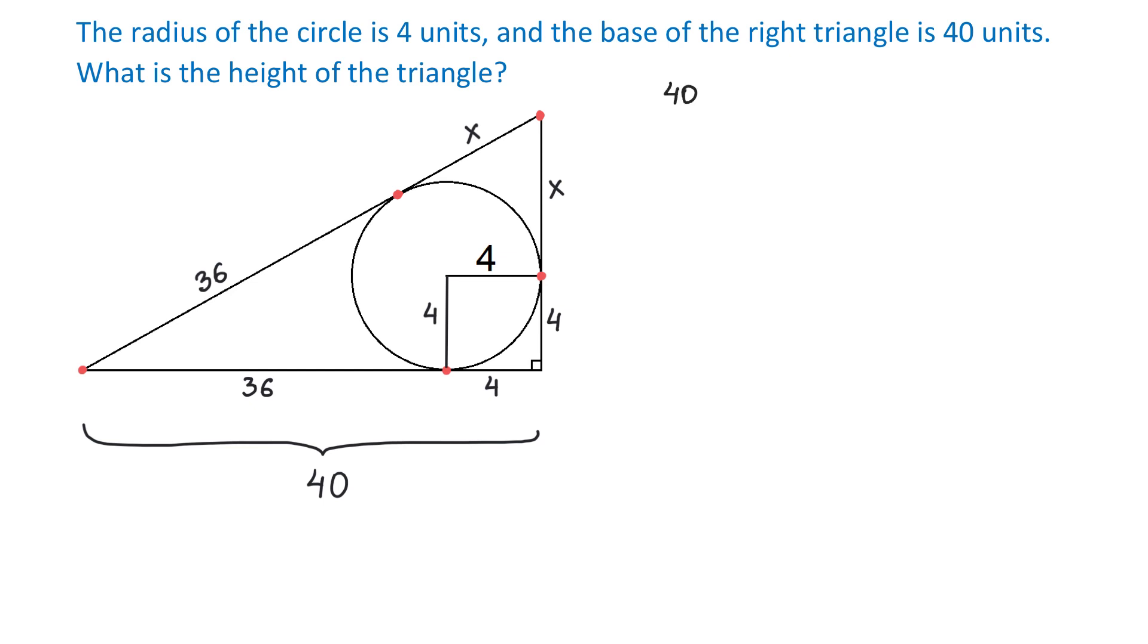40 squared plus x plus 4 squared equals x plus 36 squared. Now we need to solve this equation to find x. First, we need to remove the parenthesis, and 40 squared is 1600. Then, to remove these parenthesis, we can either use FOIL or the formula for the square of a binomial sum. Either way, x plus 4 to the second power is x squared plus 8x plus 16.